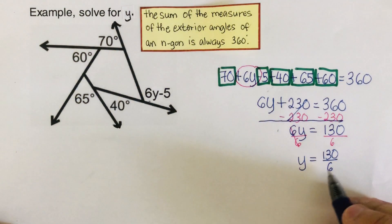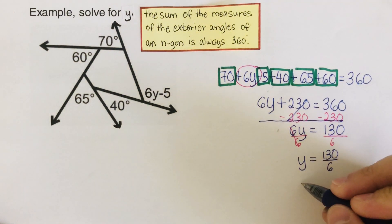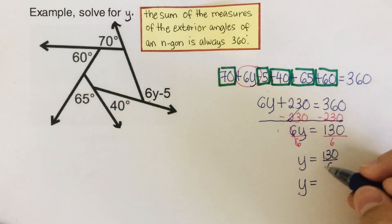We can reduce this to lowest terms. This is divisible by 2, so y equals 130 divided by 2, which is 65, over 6 divided by 2, which is 3.